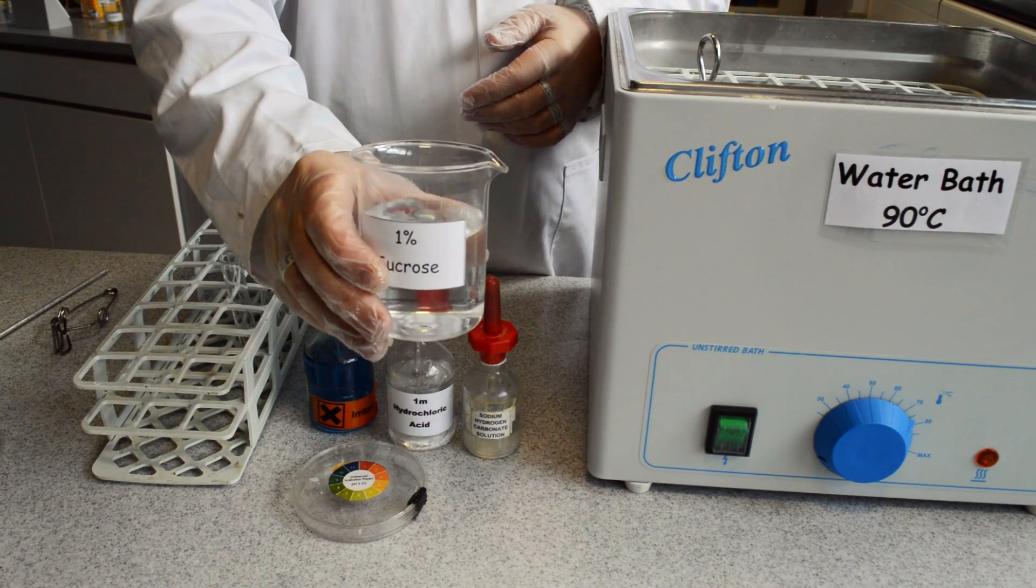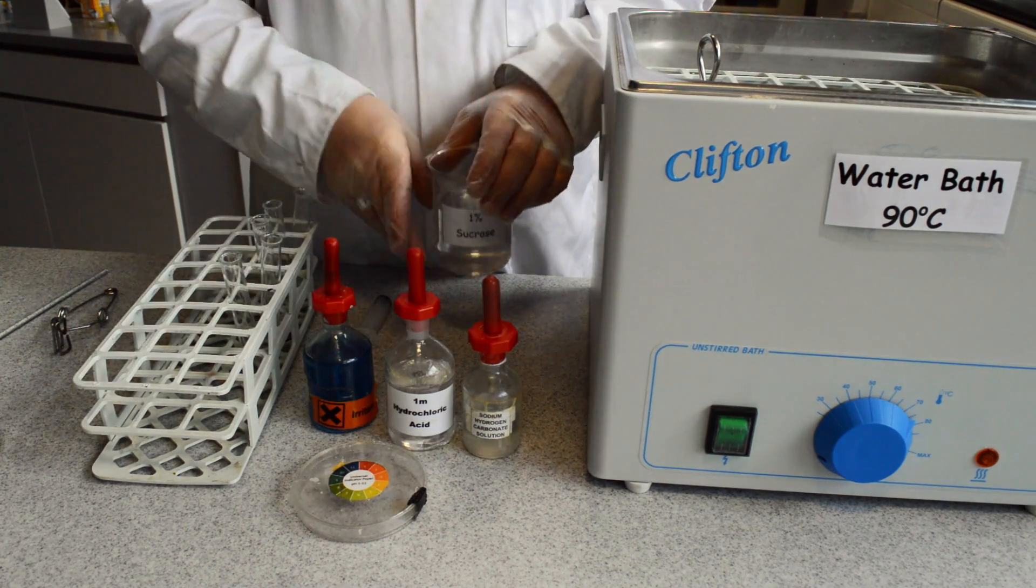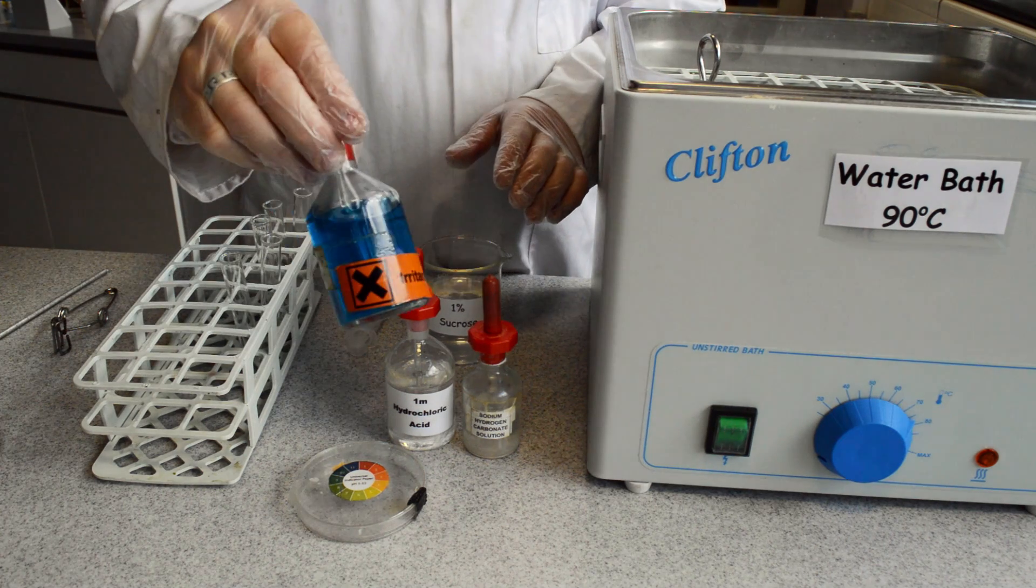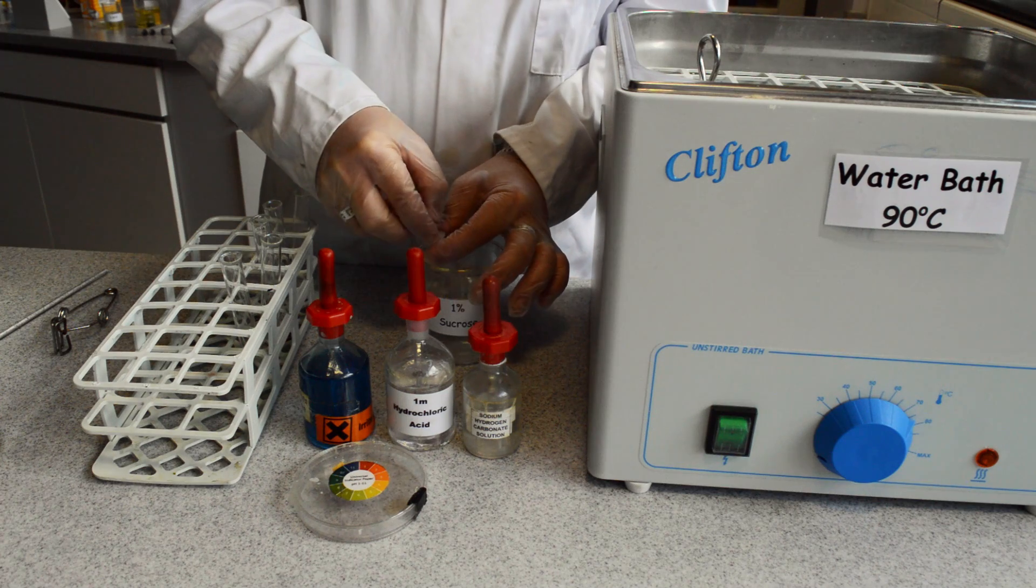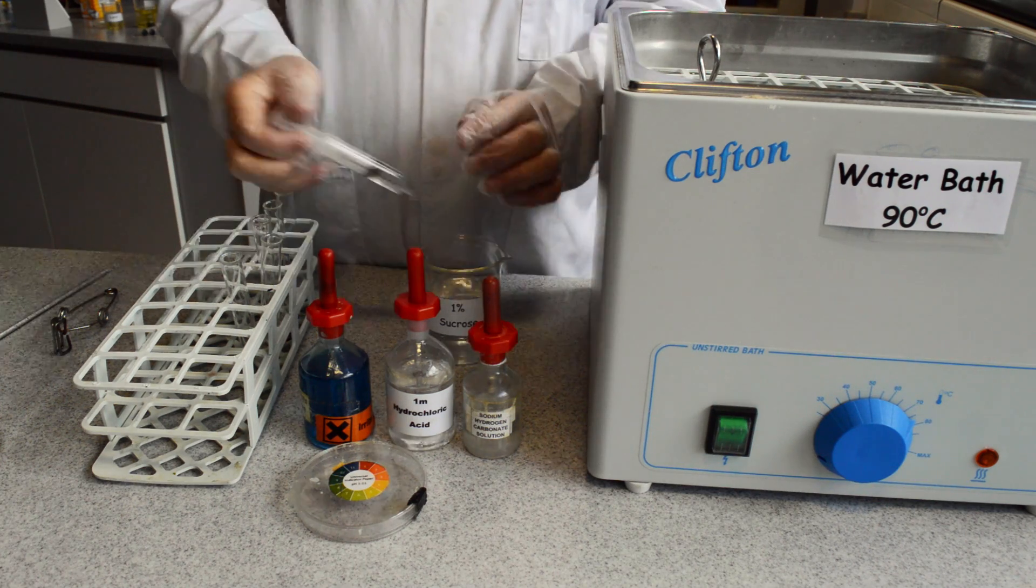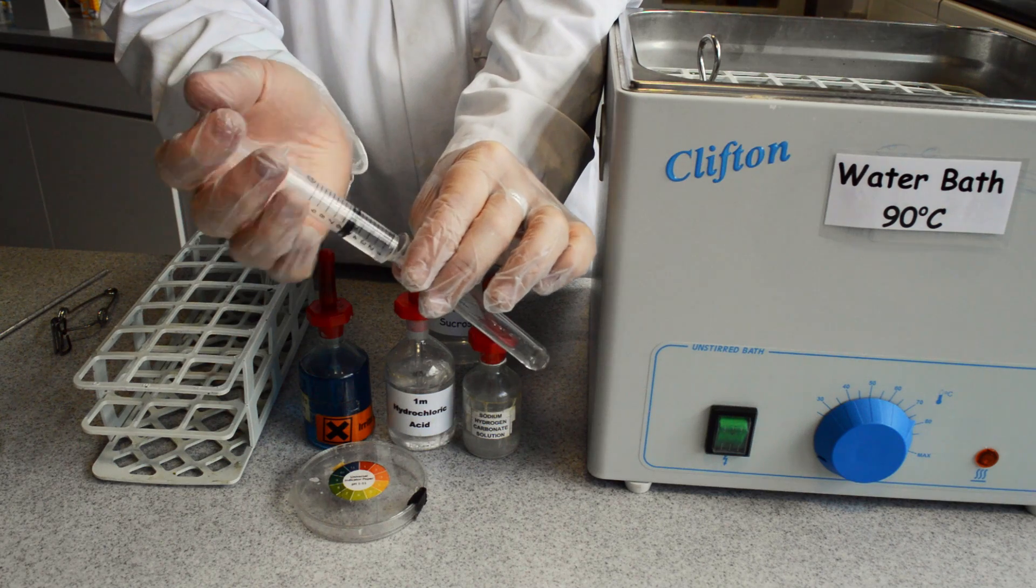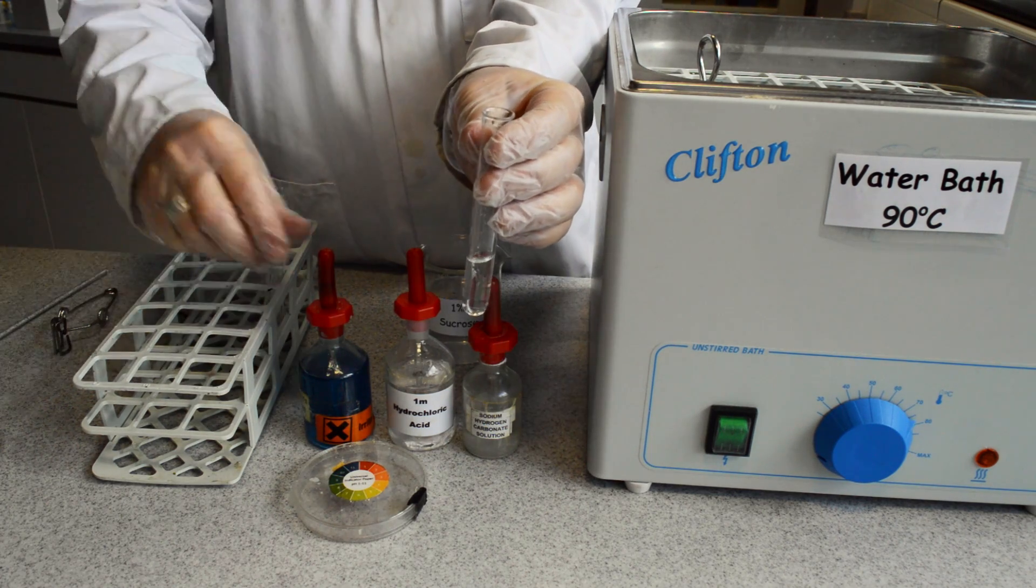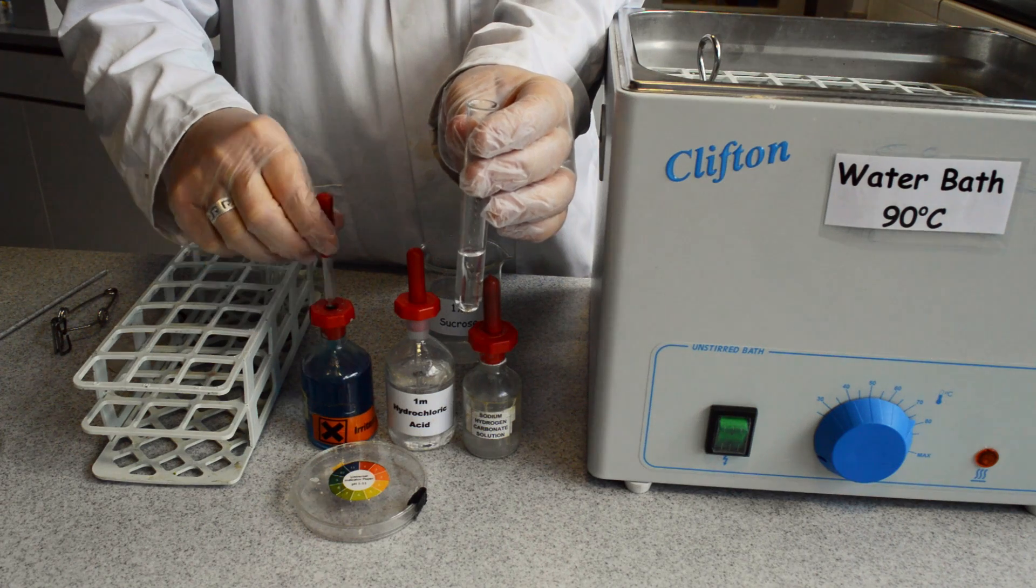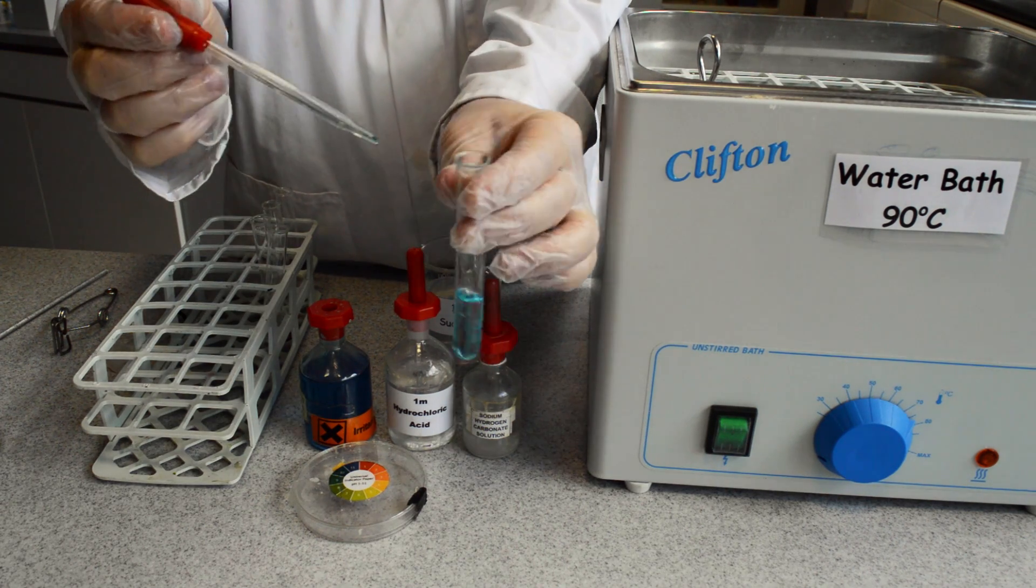Testing for sucrose, a non-reducing sugar. Sucrose is a disaccharide sugar. Using Benedict's reagent, take a 5 ml sample of your sucrose solution and place into a test tube. Then add Benedict's reagent. You will see that this gives a light blue colour.